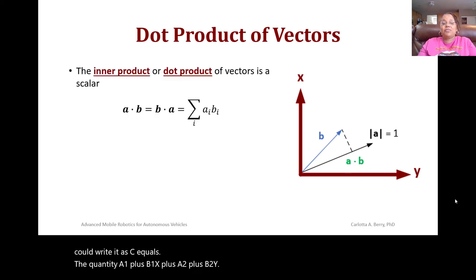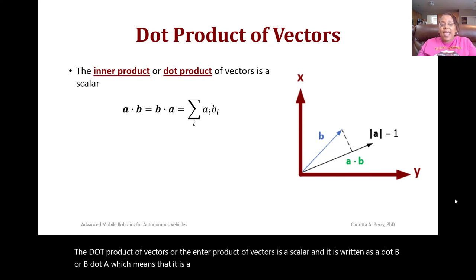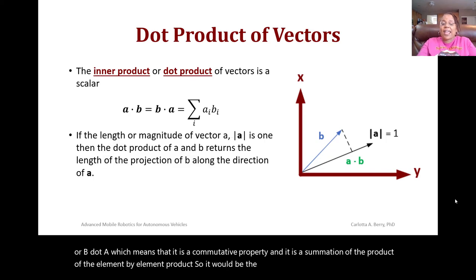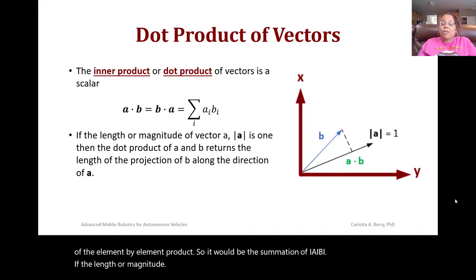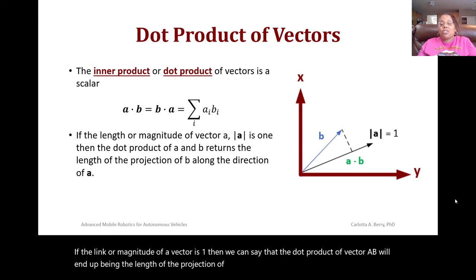The dot product of vectors, or the inner product of vectors, is a scalar, and it is written as a dot b or b dot a, which means that it is a commutative property, and it is a summation of the element by element product. So it would be the summation of i, a i, b i. If the length or magnitude of a vector is 1, then we can say that the dot product of vector a and b will end up being the length of the projection of vector b on the direction of a, as shown in the figure here.